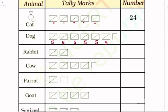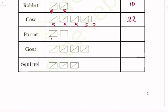Rabbit: 5 and 10. Cow: 5, 10, 15, 20, and 2. The number is 22. Parrot: 5 and 3, total 8. Goat: 5, 10, 15, 20. Squirrel: 5, 10, and 15. The number is 15.